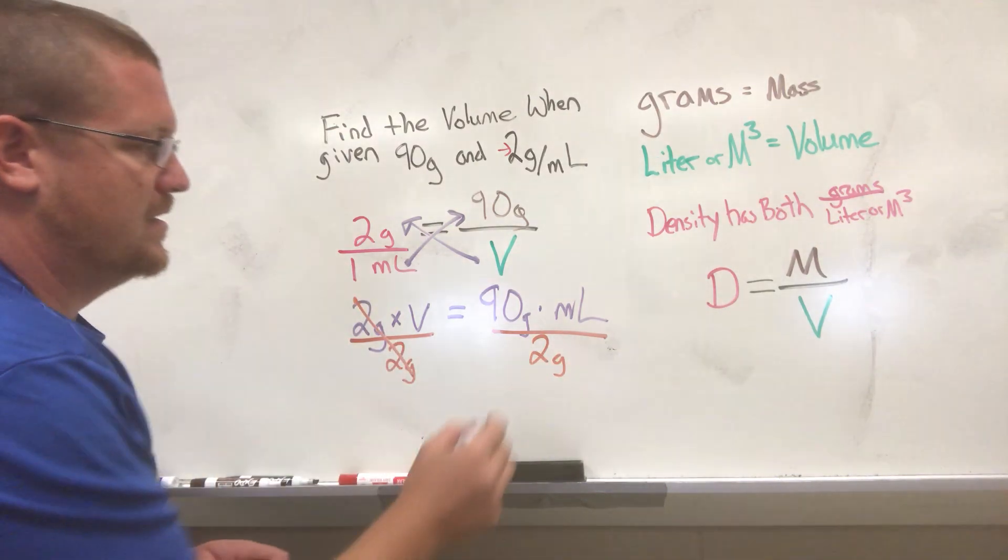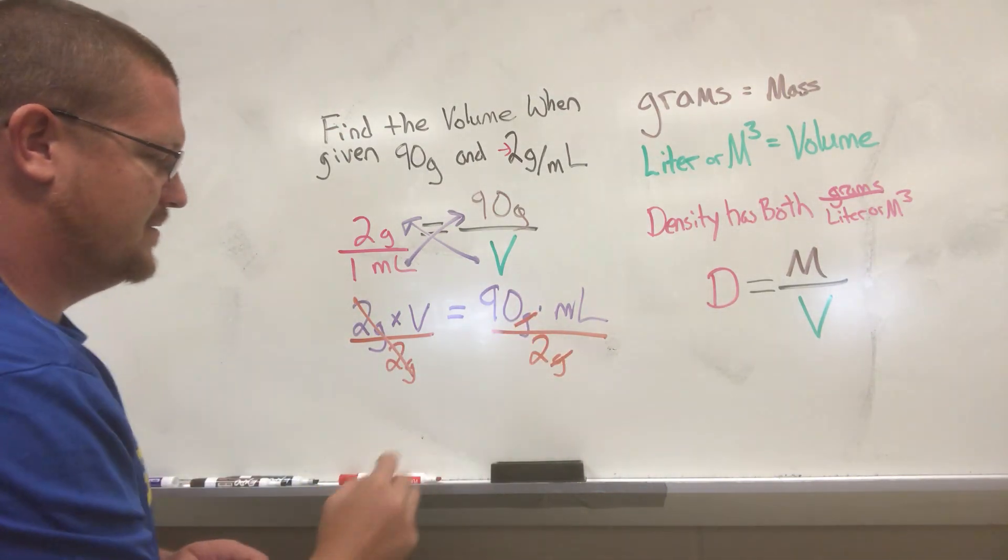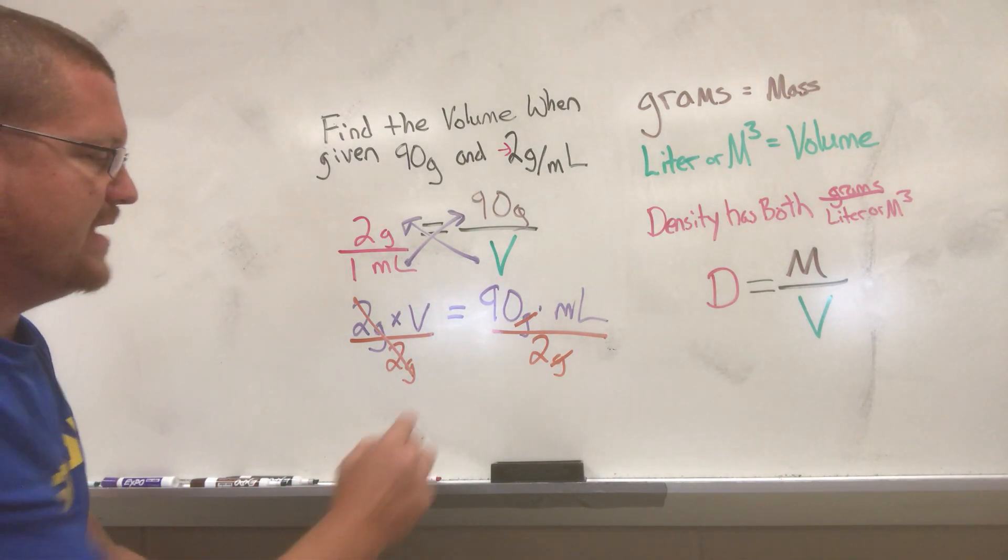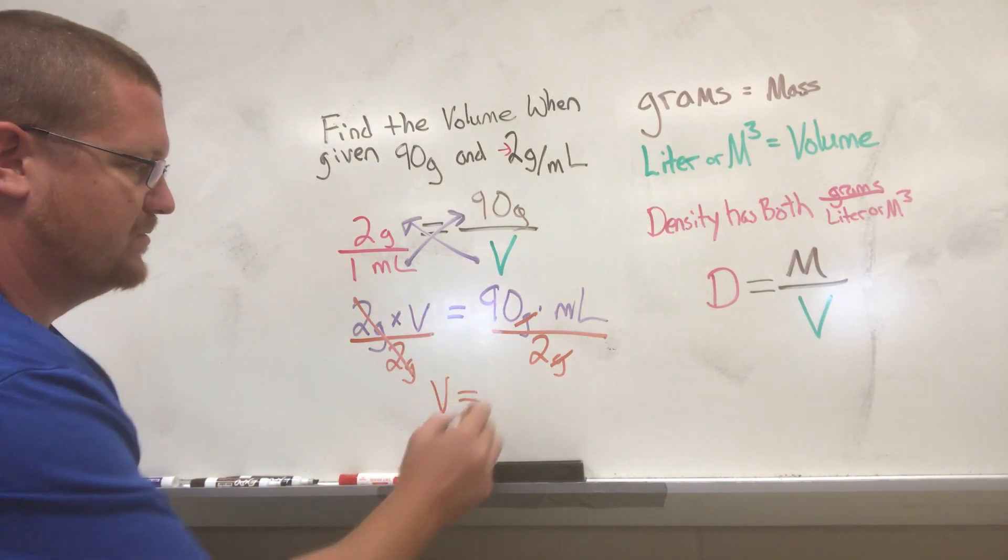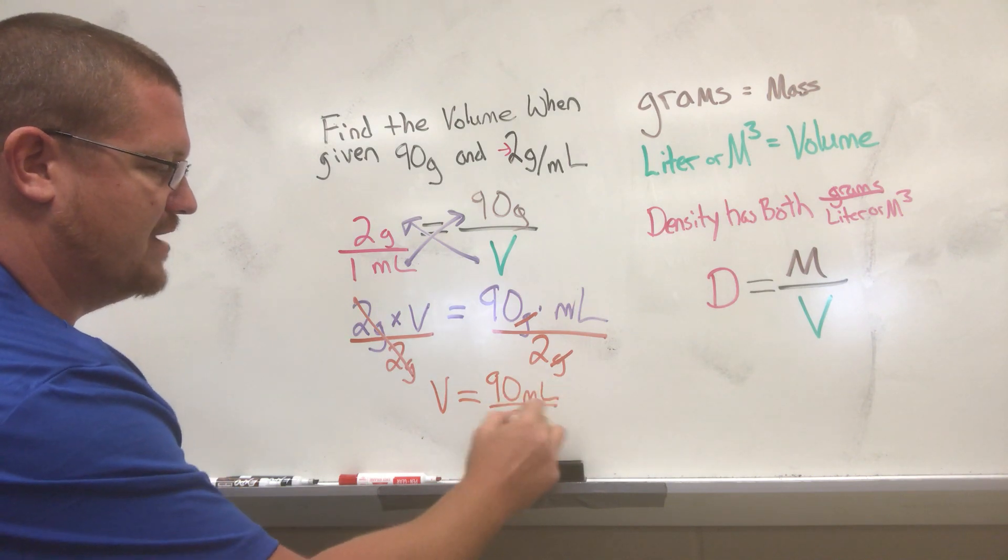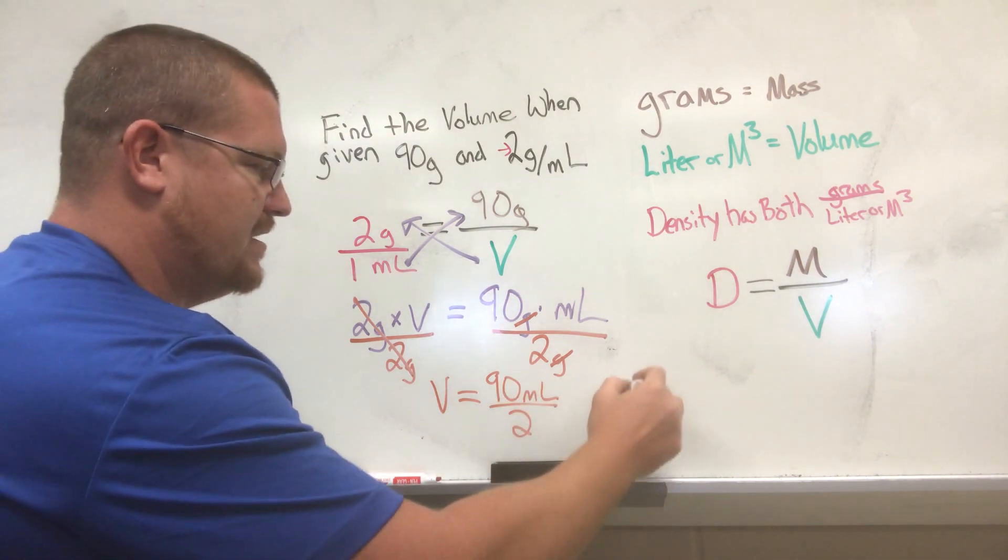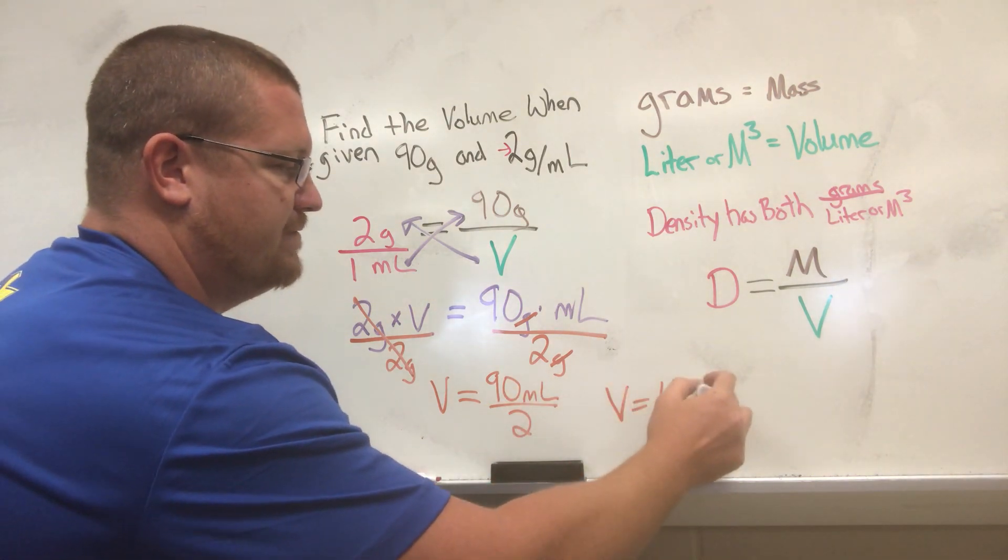This cancels and becomes 1, our grams cancel here. So now we have V equals 90 milliliters divided by 2. So V, our volume, is 45 grams.